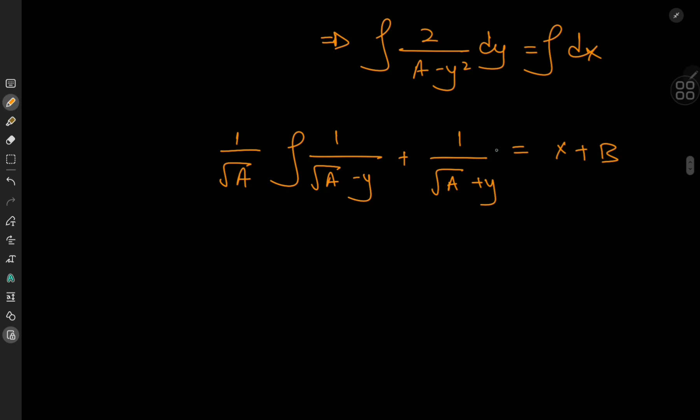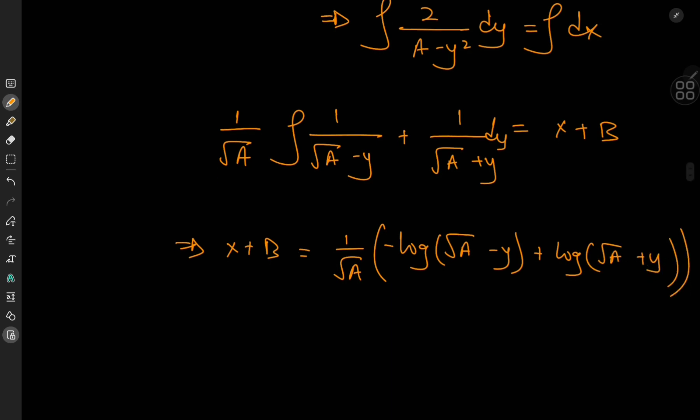And again, we have two very simple integrals to evaluate. Both of these would be logarithmic results. So we have x plus b equal to one by root a times the logarithm of root a minus y divided by negative one, plus the logarithm of root a plus y.